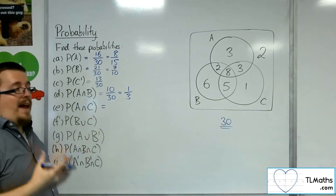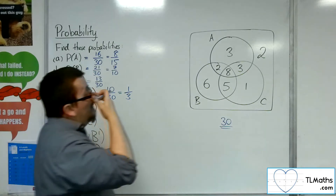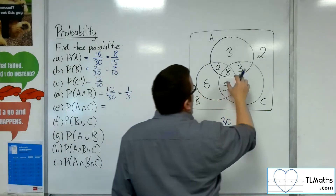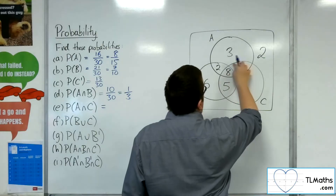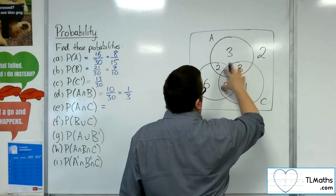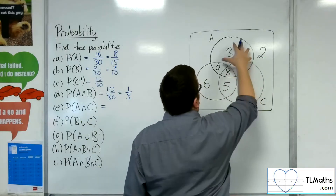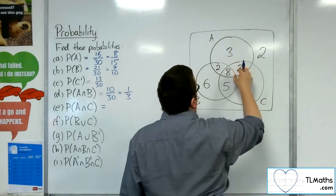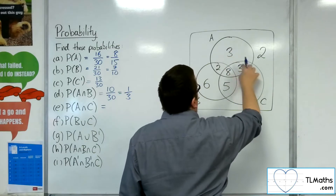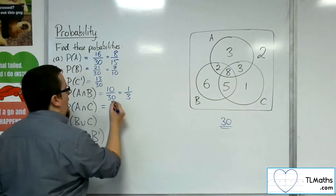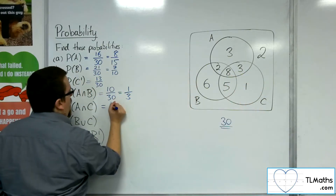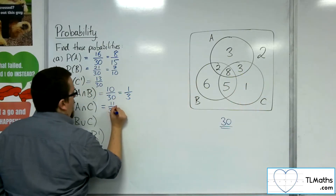The intersection of A and C would be the 8 and the 3 that are there — C and A overlap with the 8 and the 3. So that would be 11 out of 30.